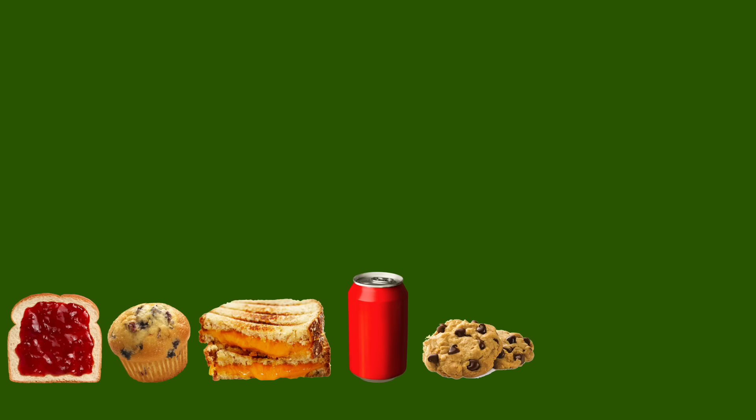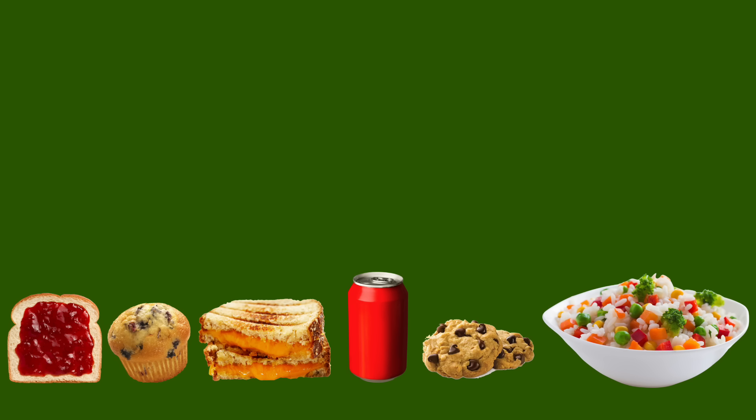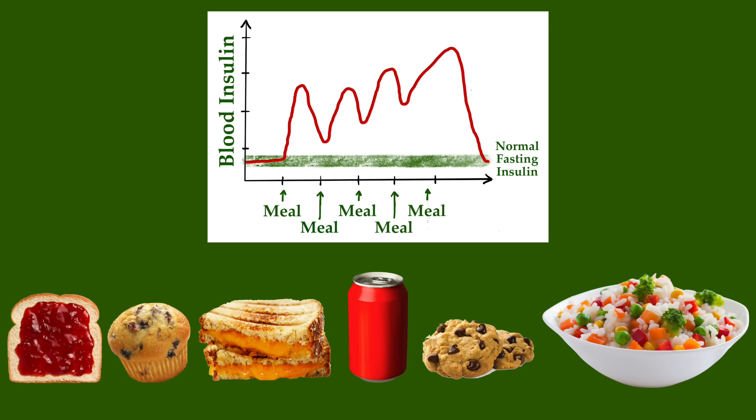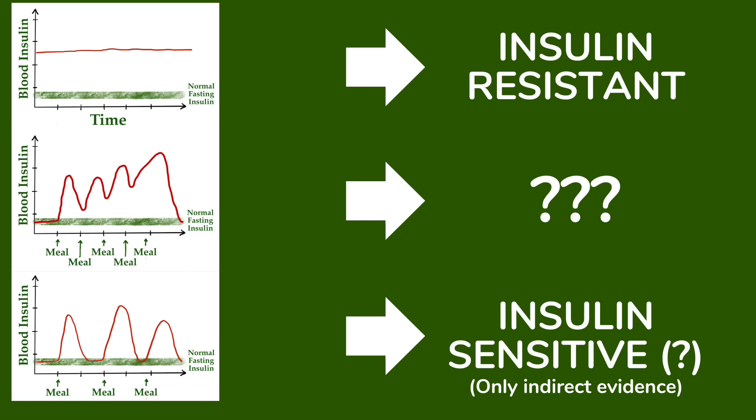An example could be someone who starts the day with toast and jam, then has a muffin as a snack two hours later, a sandwich with soda for lunch, chocolate chip cookies as an afternoon snack, and rice with vegetables for dinner. This highly glycemic diet with regular snacks would be expected to keep blood insulin levels elevated above baseline all day. Whether this could cause insulin resistance, I don't know — I think it could, but we just don't have a good human intervention study that has tested this. Even without that evidence, it's certainly not a good habit to consume refined grains and sugars regularly, or to never give your body a break from calories.